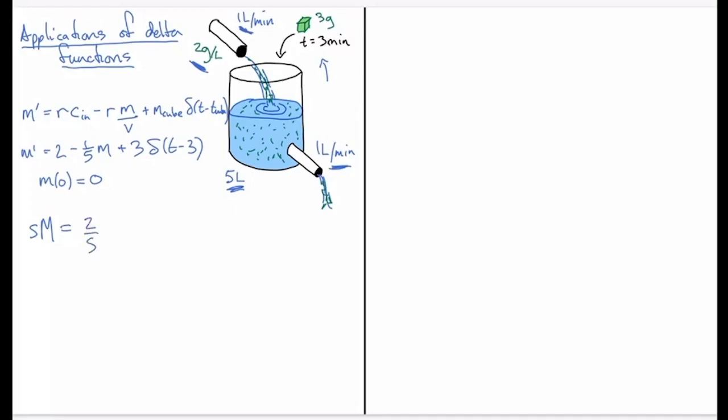So we have S times capital M and then there's no M of 0 contribution from the Laplace transform of m prime because of the initial condition. On the other side we get 2 over S from the transform of the constant 2, and then minus 1 over 5 times capital M plus 3. And the transform of the delta function, as we went over in the previous video, is e to the minus 3S. That 3 is the time at which the delta function is centered.